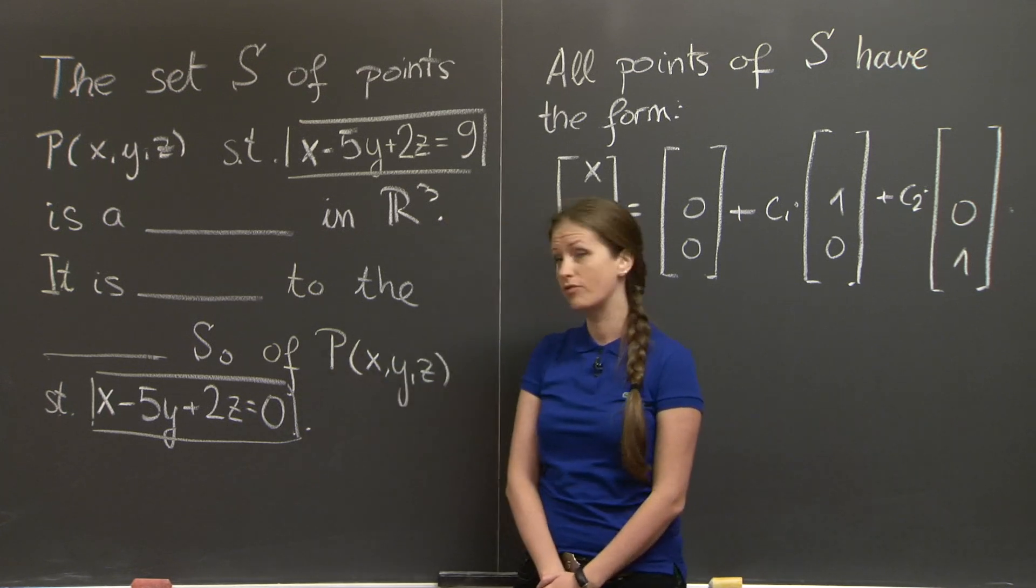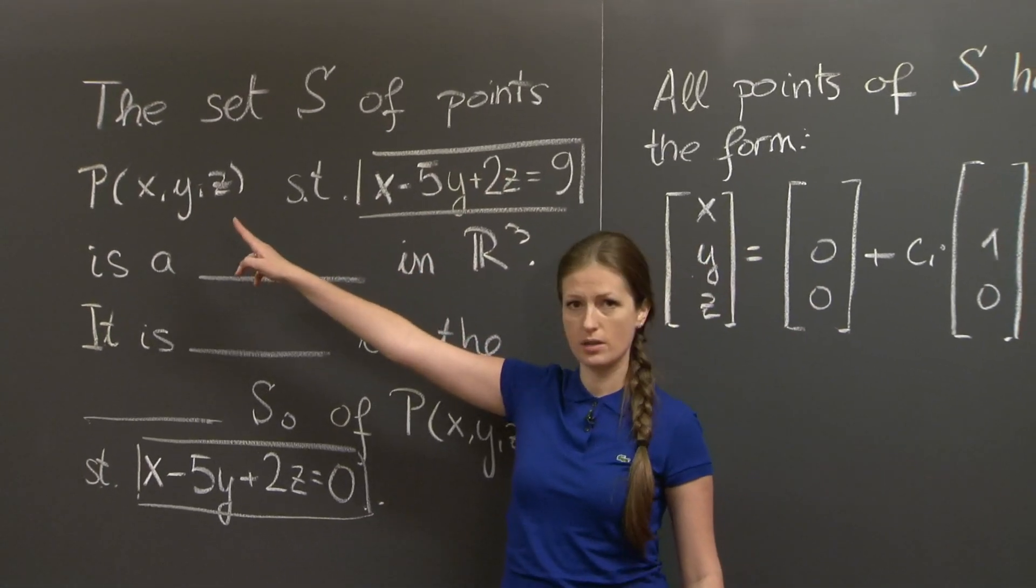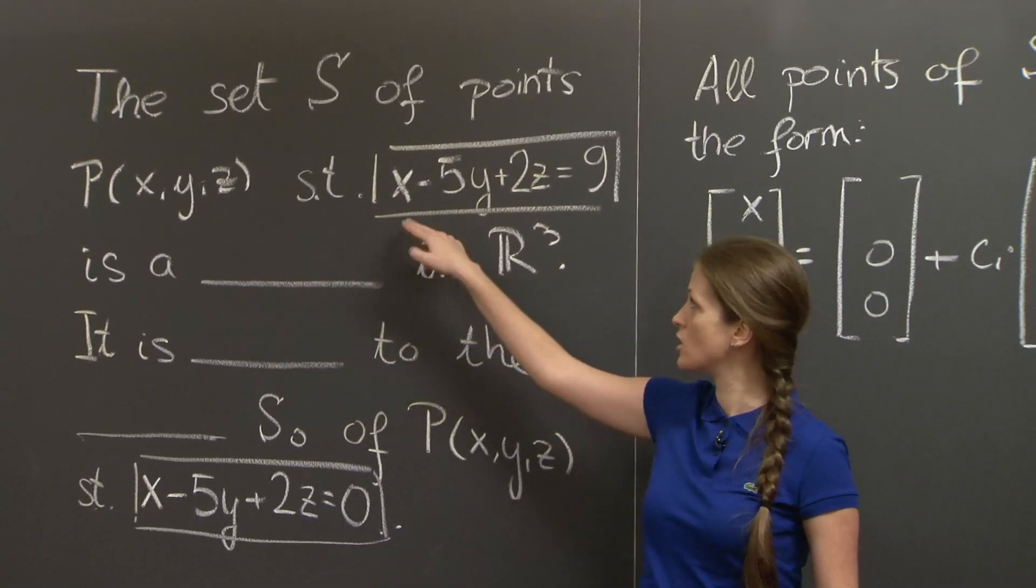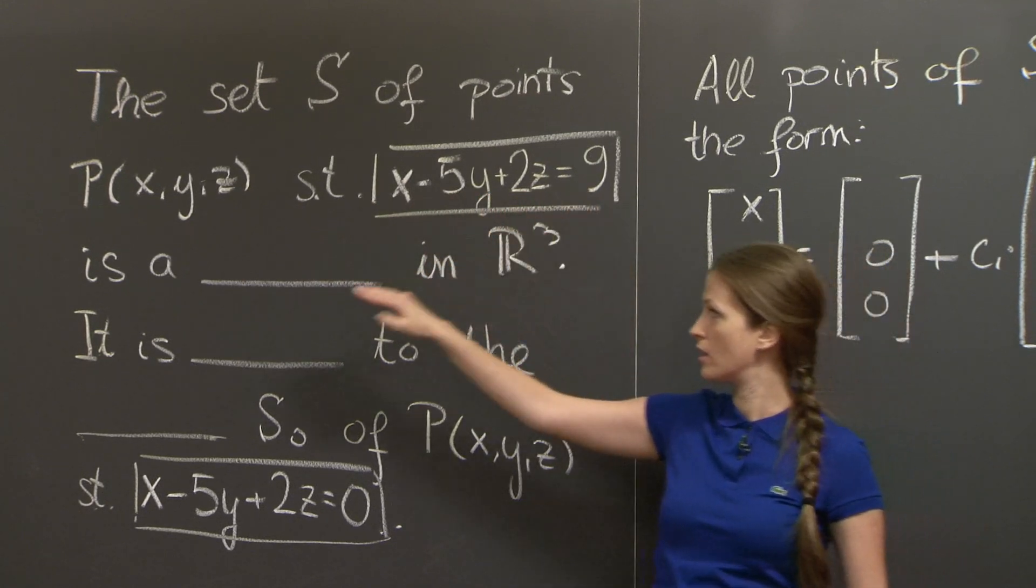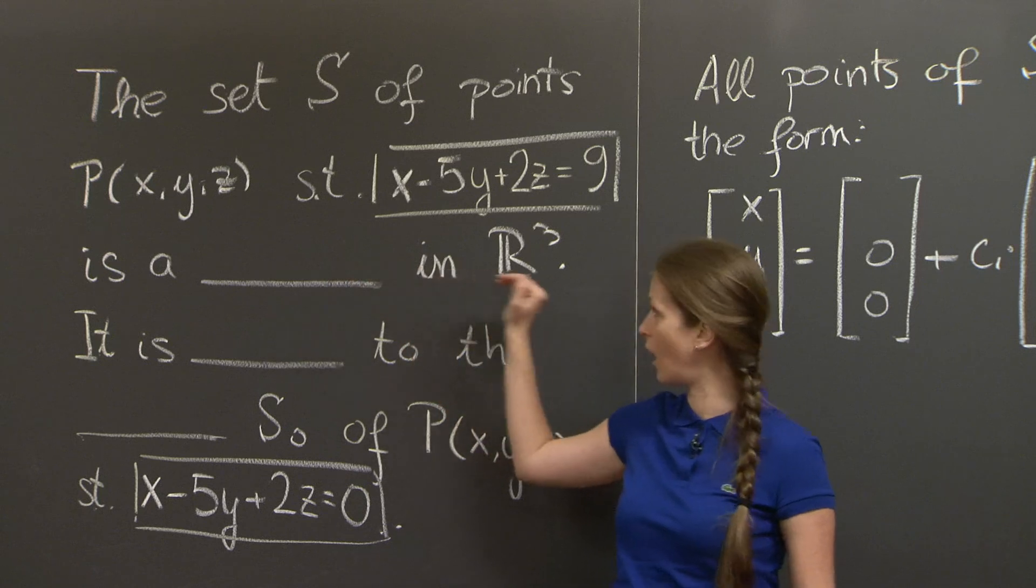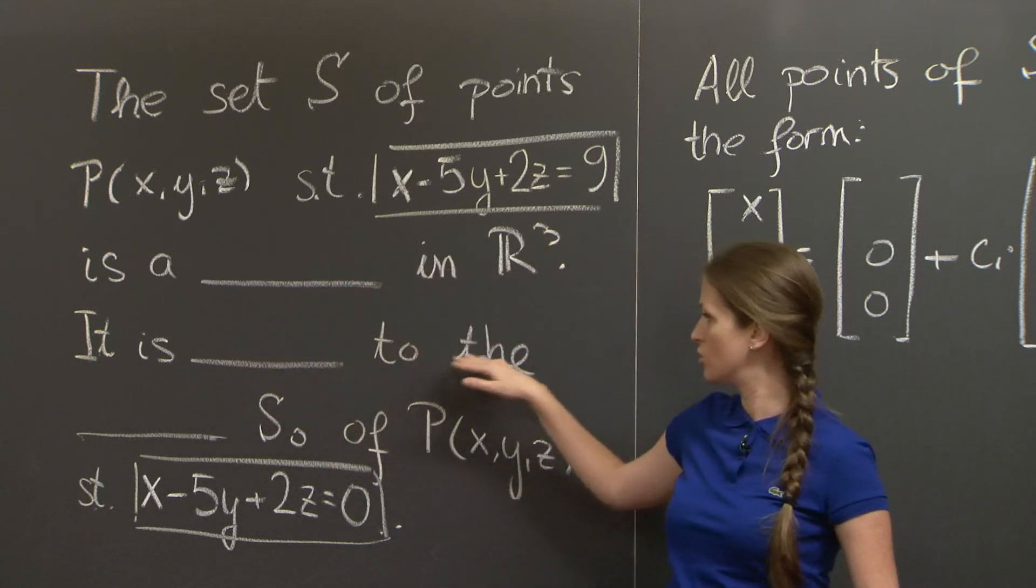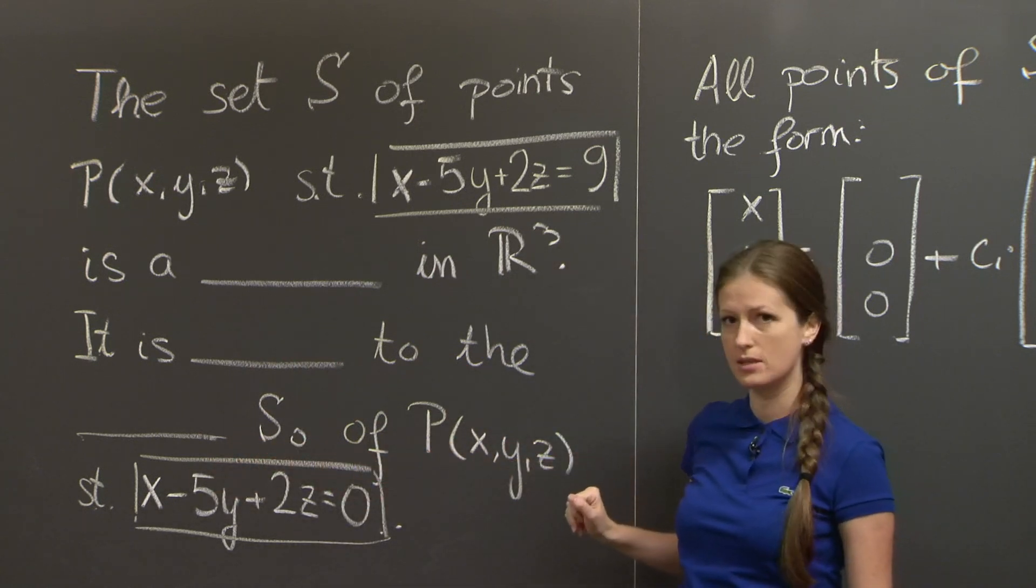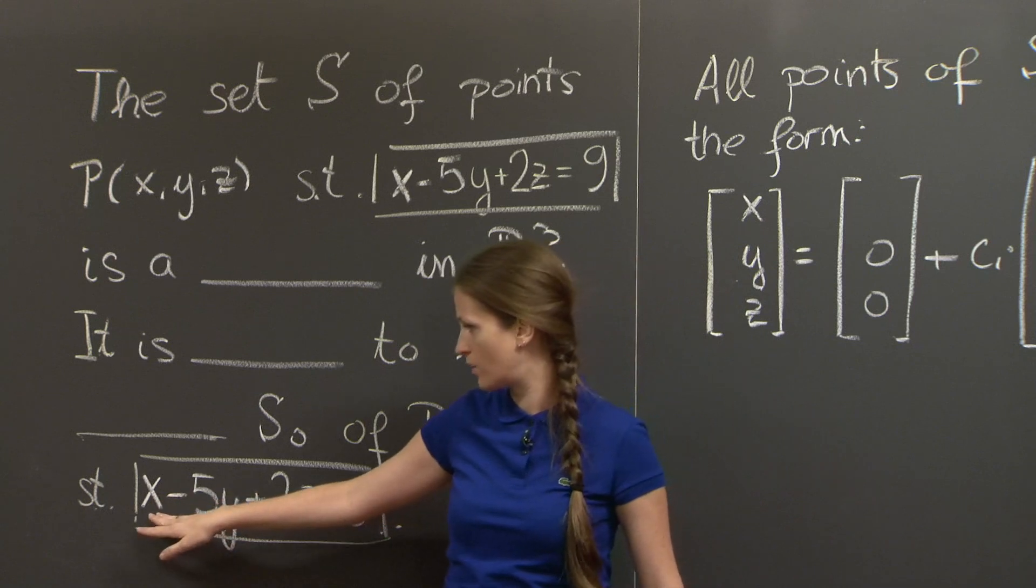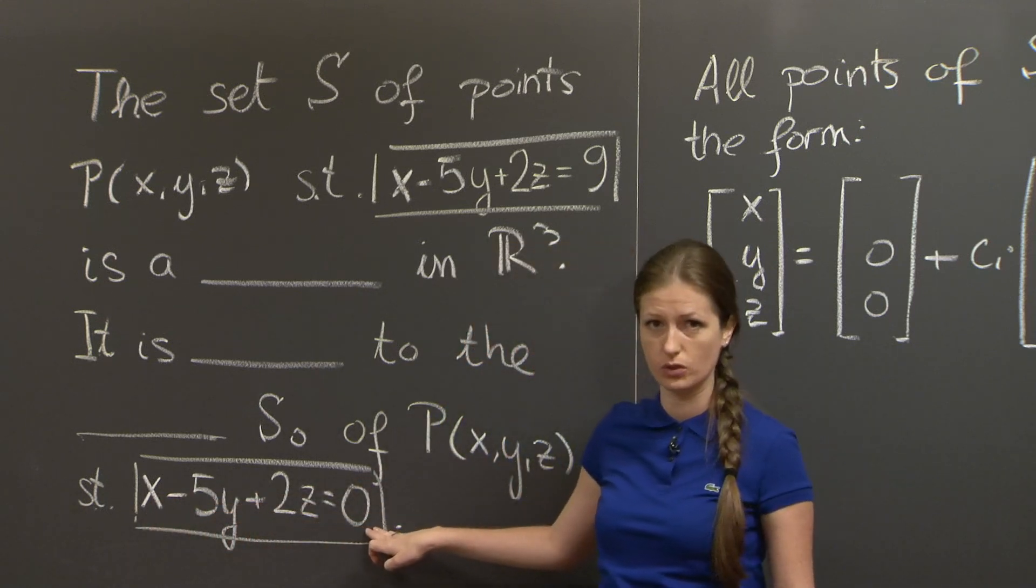The problem is fill in the blanks type, and it says the set S of all points with coordinates x, y, and z such that x - 5y + 2z = 9 is a blank in R³. It is in a certain relation to the other blank, S₀, of all the points with coordinates x, y, and z that satisfy the following linear equation x - 5y + 2z = 0.